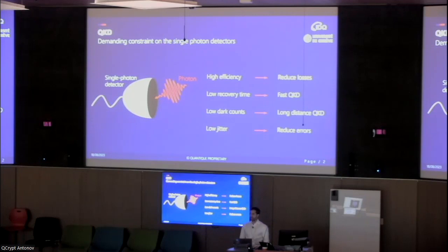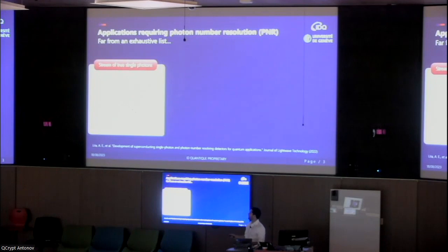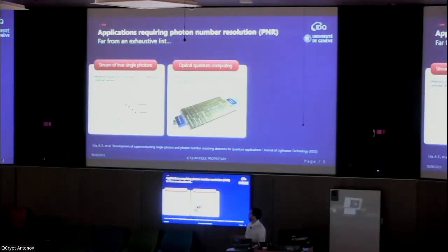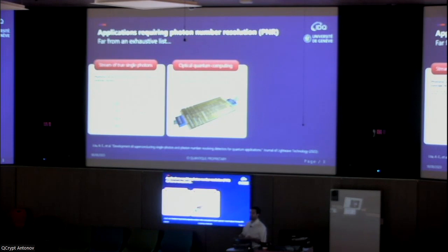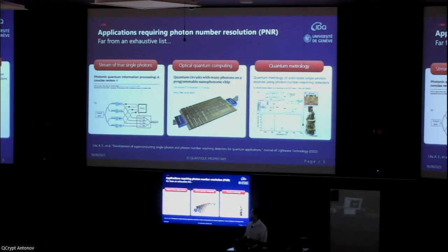Moreover, other applications in quantum technologies require a feature called photon number resolution — knowing at a certain time how many photons are arriving on your single photon detectors. This is interesting for creating a stream of true single photons and filtering out multi-photon pairs. It's extremely relevant in optical quantum computing to determine the photon number state at the end of a computation, and in quantum metrology to assess the purity of single photon sources or study exotic systems.